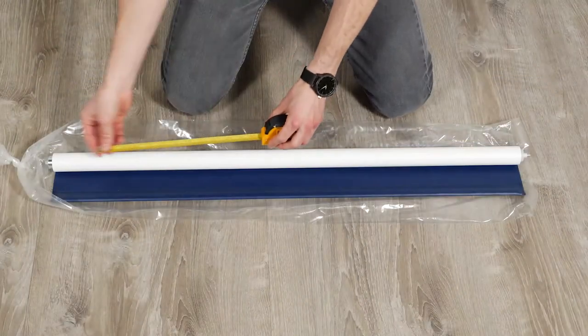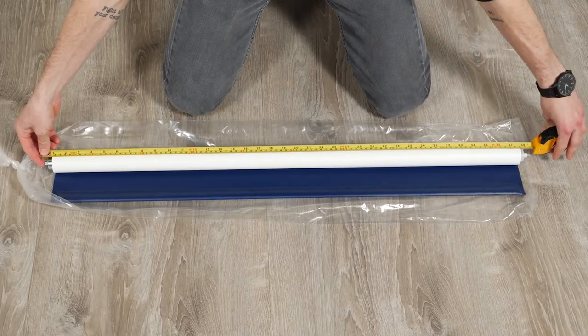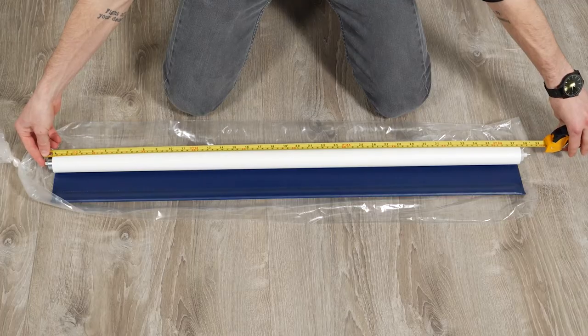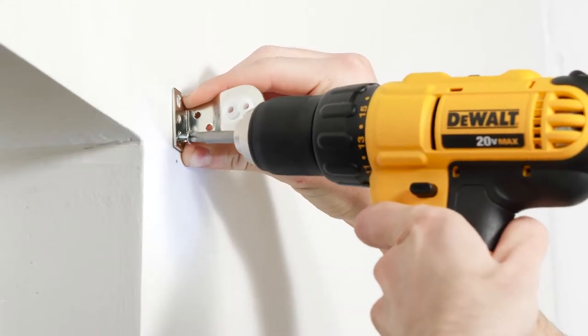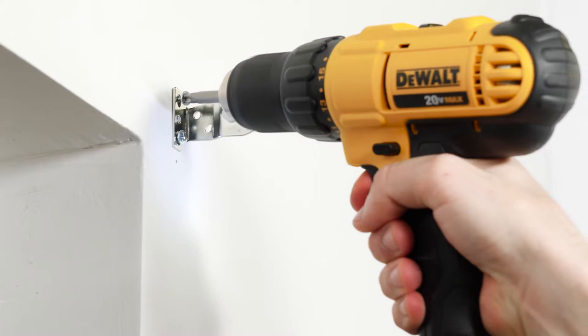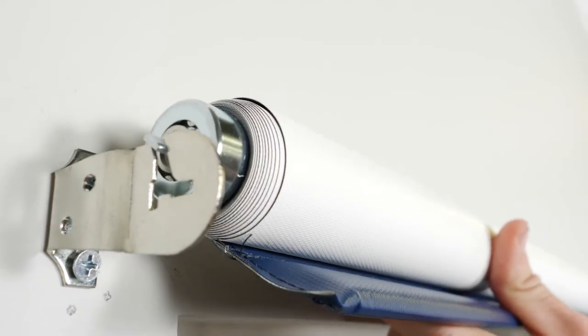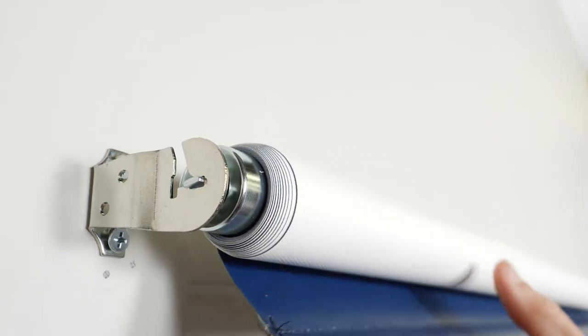Depending on the type of shade you ordered, the pieces or parts you have may be a little different. That's okay. You'll follow basically the same steps I'll go through here to hang them. Just be sure to check the instructions that came with your product before you start.